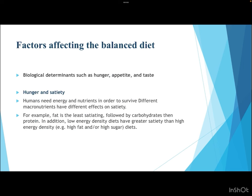Regarding biological determinants — hunger and satiety — humans need energy and nutrients to survive. Different macronutrients have different effects on satiety: fat is the least satiating, followed by carbohydrates, then protein. In addition, low energy density diets have greater satiety than high energy density diets such as high fat or high sugar diets.